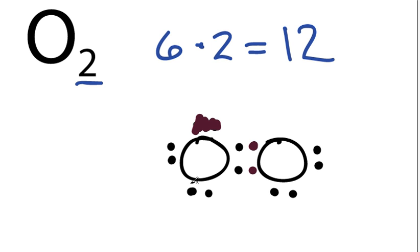And we have 2, 4, 6, 8, 10, 12. 12 valence electrons, just like we started with. So everything's good. Our octets are satisfied. We've used all the valence electrons.